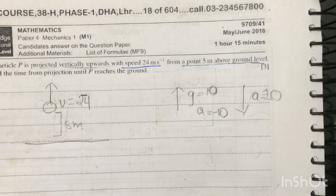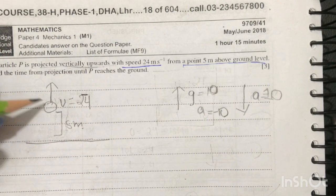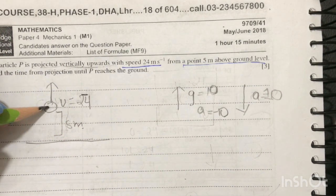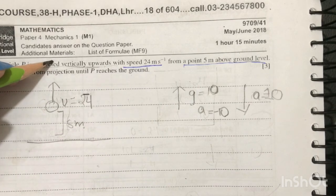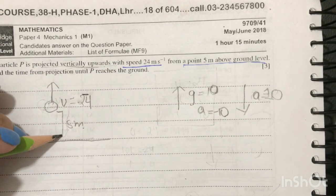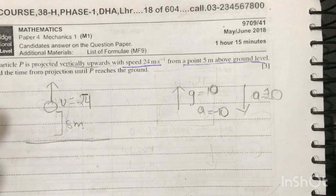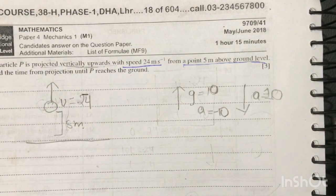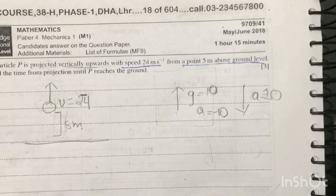So now they are saying that a particle, find the time from projection after the particle moves forward, moves upward, reaches its maximum height, and then from that maximum height comes and reaches the ground, which means it covers this whole distance.